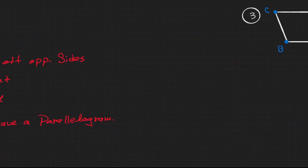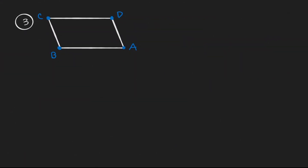Let's take a look at the third situation. Here we have another quadrilateral ABCD. If we are given that opposite angles are congruent — angle A is congruent to angle C, and angle B is congruent to angle D — then we can make the conclusion that the figure is a parallelogram.